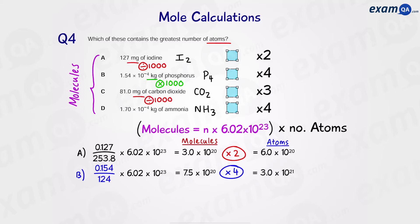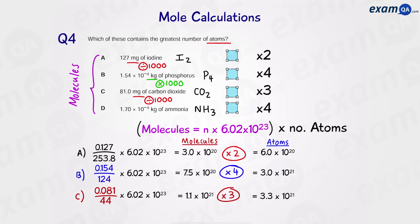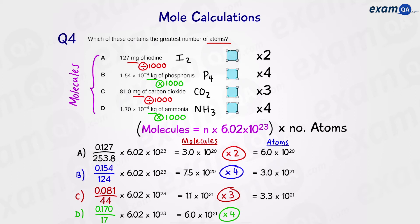For part C, divide by 1000 to convert milligrams into grams, then divide by the Mr of CO2. Times this by Avogadro's constant to get the number of CO2 molecules. Remember, one CO2 molecule has 3 atoms. For part D, times by 1000 to convert kilograms to grams, divide by the Mr of ammonia which is 17, times by Avogadro's constant for number of molecules, then times by 4 since there are 4 atoms in one ammonia molecule. We can see that D is the answer.